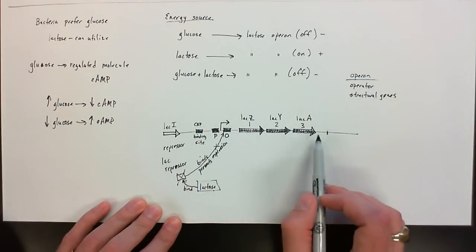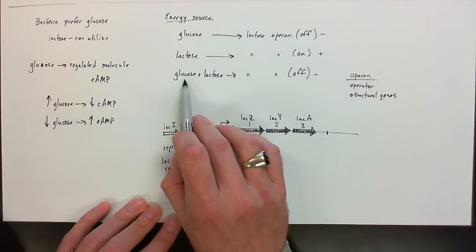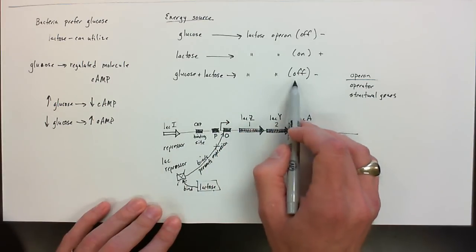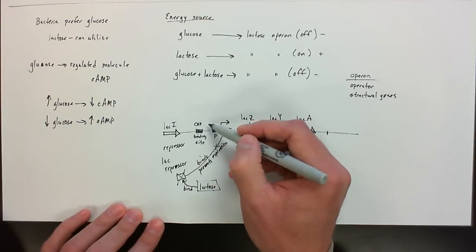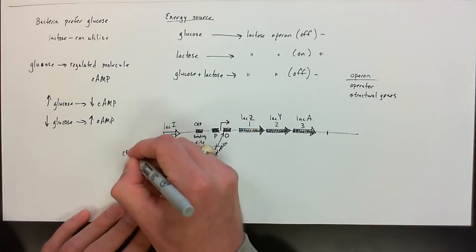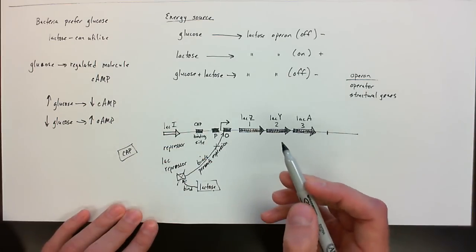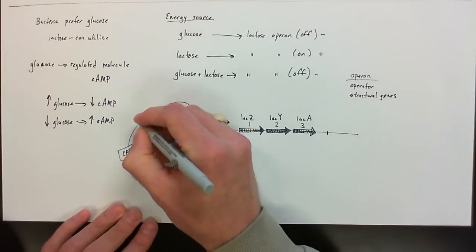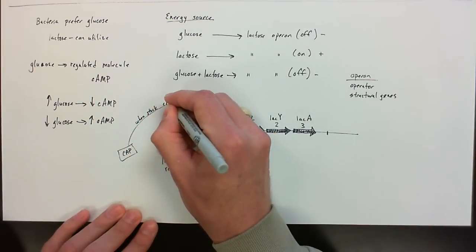Now there is another level of complexity here, because we still have to ask the question, what happens when we have both glucose and lactose? We want to keep that lactose operon off. So obviously, there's another level of control here, and that's where the CAP binding site comes into play. So CAP is actually a protein that when it is made, it can only bind when bound with cyclic AMP.